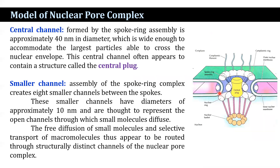The central channel formed by the spoke-ring assembly is approximately 40 nanometers in diameter, wide enough to accommodate the largest particles able to cross the nuclear envelope. The central channel often appears to contain a structure known as the central plaque, which some investigators think is an intrinsic component of the nuclear pore complex that regulates transport through the central channel. In addition to the large central channel, the spoke-ring assembly creates 8 smaller channels between the spokes, approximately 10 nanometers in diameter, which are thought to represent the open channels through which small molecules diffuse. The free diffusion of small molecules and selective transport of macromolecules thus appear to be routed through structurally distinct channels of the nuclear pore complex.